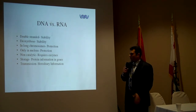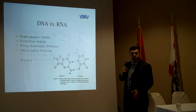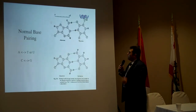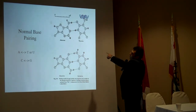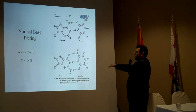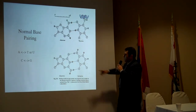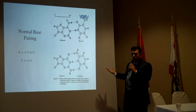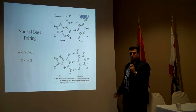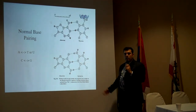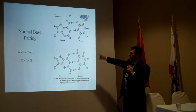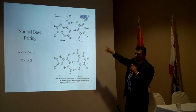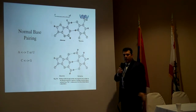DNA transmits hereditary information. Here is how the base binding works: adenine binds to thymine (A-to-T binding) and cytosine binds to guanine (C-to-G binding). These are hydrogen bonds — very simple chemistry. There are two hydrogen bonds for adenine and thymine, and three for cytosine and guanine.